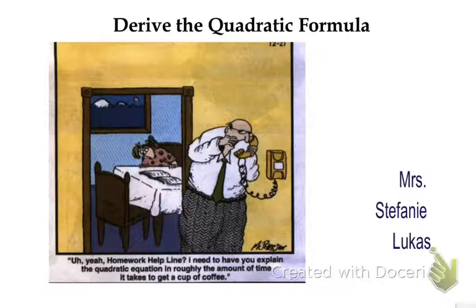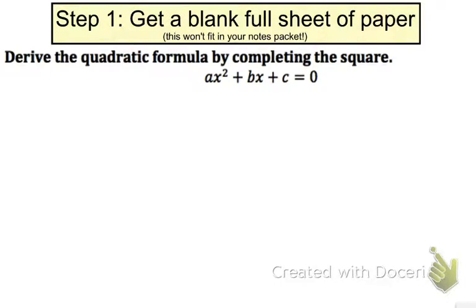I am going to show you where the quadratic formula actually comes from. Step one, you should probably get a blank full sheet of paper because I don't think this will quite fit in the amount of space that I gave you in your notes packet. So we are going to start with ax² + bx + c = 0, and we want to complete the square to solve for x with these abstract a, b, and c coefficients and constants.